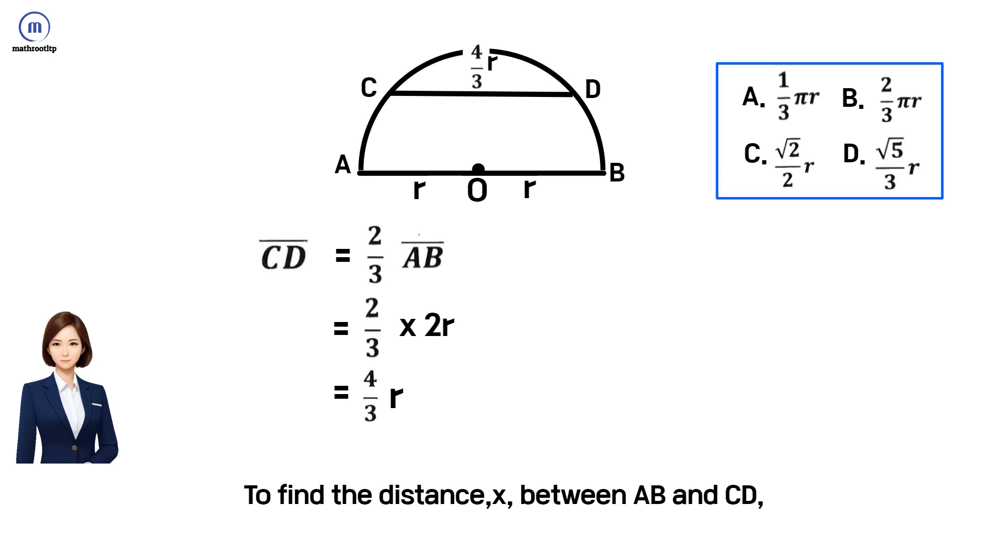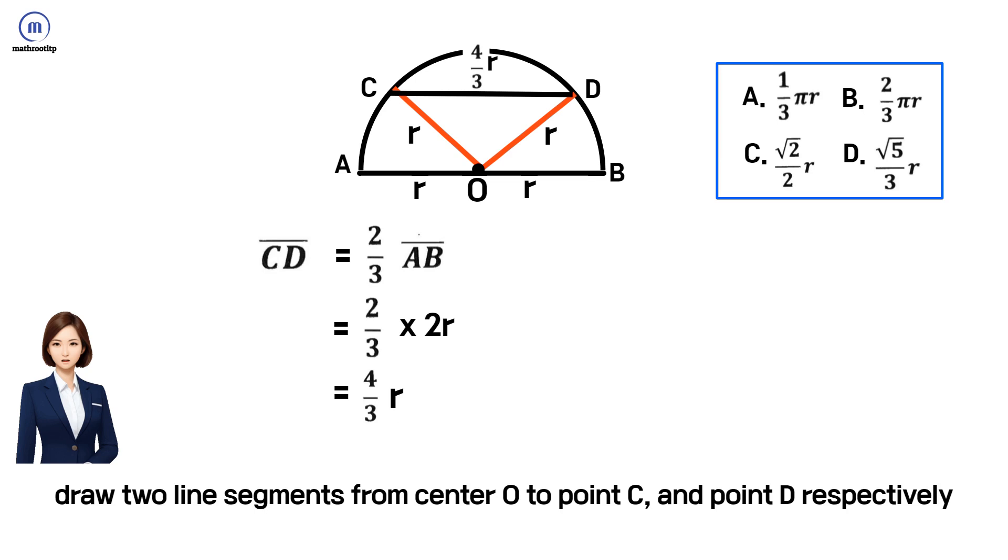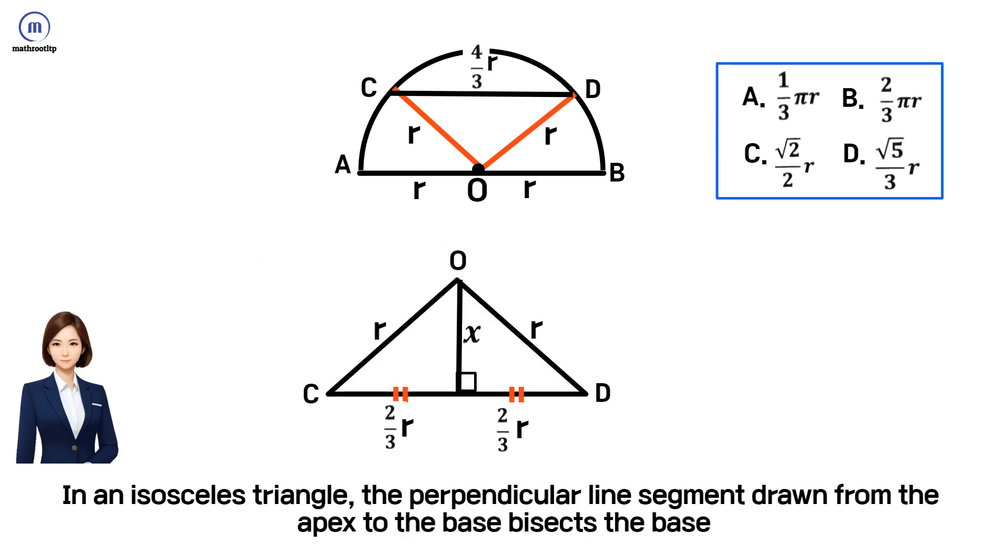To find the distance between AB and CD, draw two line segments from center O to point C and point D respectively. In an isosceles triangle, the perpendicular line segment drawn from the apex to the base bisects the base.